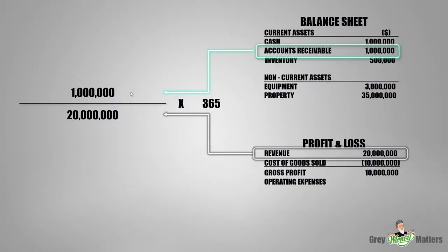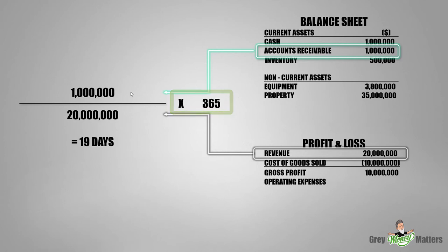Moving forward, we place the 20 million dollars worth of sales in the denominator, which is located at the bottom of the equation. The value from dividing 1 million dollars by 20 million is then multiplied by 365 to give us the efficiency figure in terms of days. Here we see 19 days — this is pretty good, as the value indicates that every 19 days on average we will receive our entire accounts receivable balance in cash from our customers.